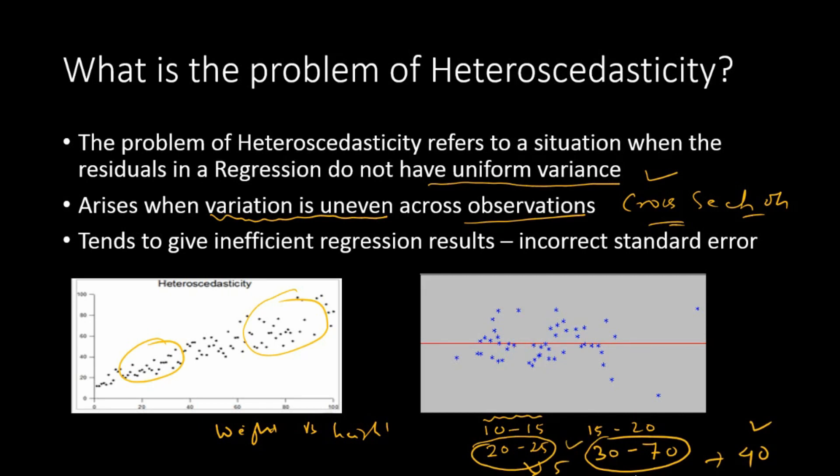These are typical cases where heteroscedasticity happens, primarily in cross-section data. Why do we worry? Why do we ensure it doesn't present in the data? It tends to give inefficient regression results—incorrect standard error. Incorrect standard error means your standard error is either underestimated or overestimated. Both are bad; you cannot interpret your results if you have incorrect standard errors.